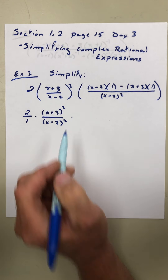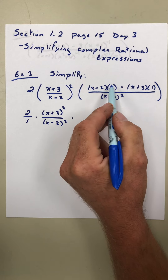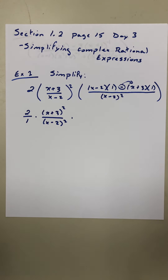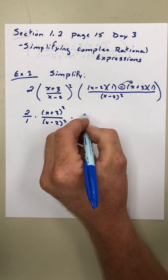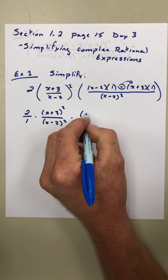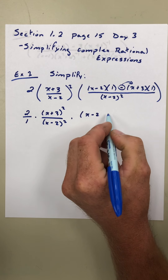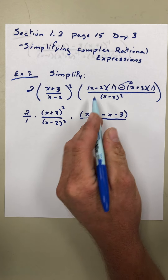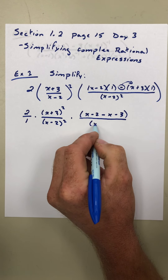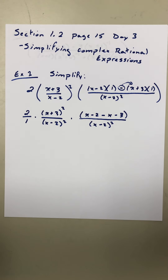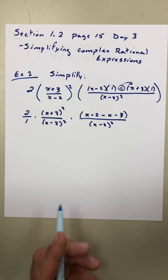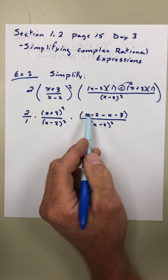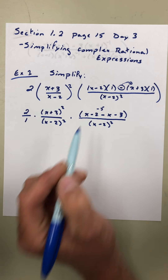We're going to multiply the one through and this one through, as well as this negative through. So up here we have the quantity of x minus two minus x minus three. I'm going to break up that numerator and denominator, so it's over x minus two squared. I can go inside this quantity and clean this up a little bit — the x's are going to cancel, and negative two minus three gives us negative five.